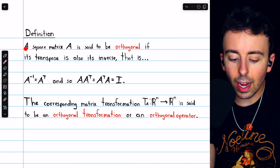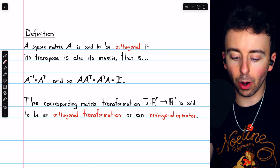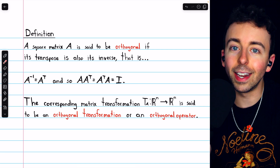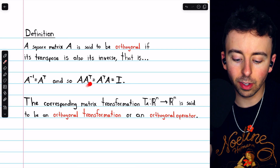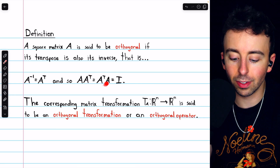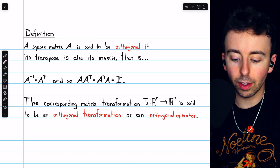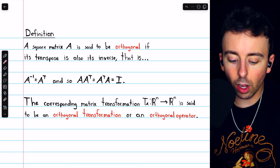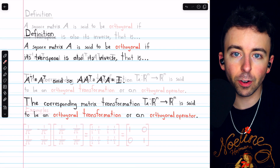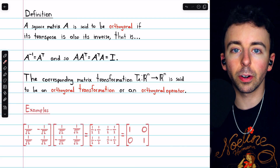Beginning with the definition, we say that a square matrix A is orthogonal if its transpose is also its inverse, so A inverse equals A transpose. Hence we would have that A times its transpose is equal to the identity, and A transpose times A is equal to the identity. If we view an orthogonal matrix as a matrix transformation from Rⁿ to Rⁿ, we call that an orthogonal transformation or an orthogonal operator.